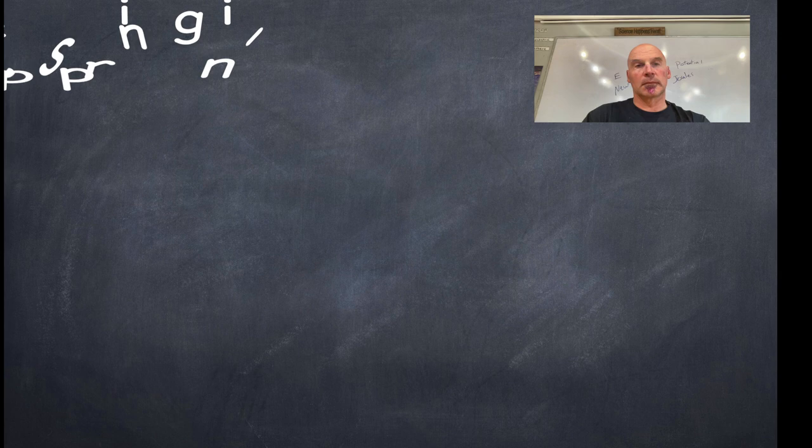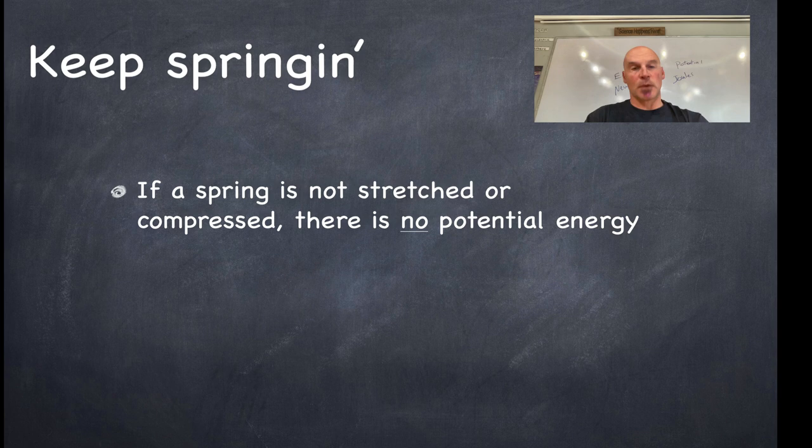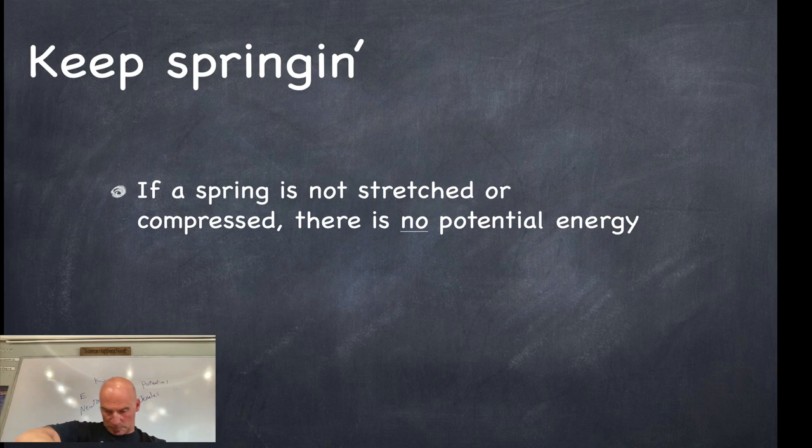Alright, so let's keep on springing. So if a spring is not stretched or compressed, there is no potential energy. So if it's just in the zero position, just on the zero position on the desk, then it has no potential energy. So this is called the equilibrium position, meaning equilibrium meaning equal.